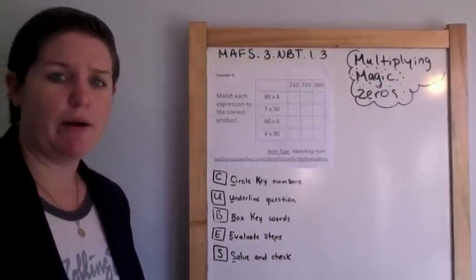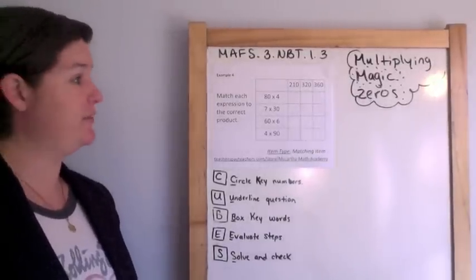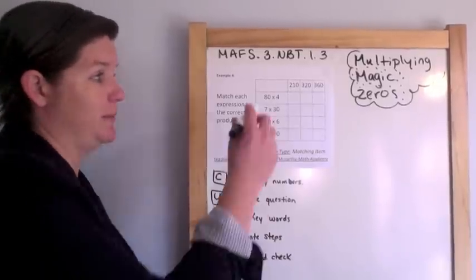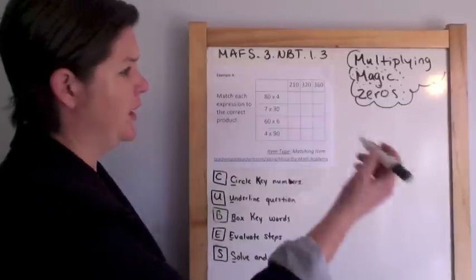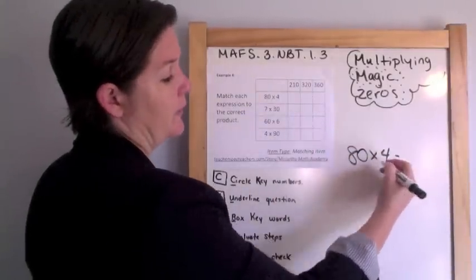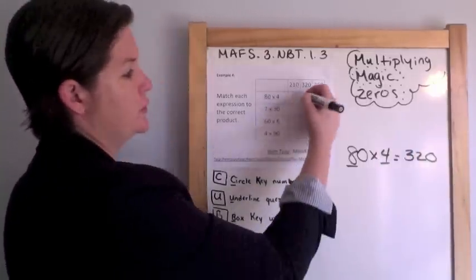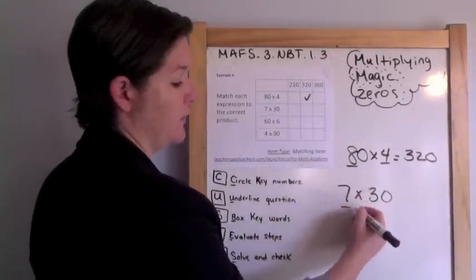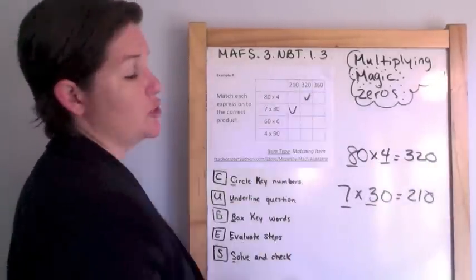Example number four. Match each expression — remember, an expression does not have an equal sign — to the correct product. I'm matching by putting a little check in the box. So we've got 80 times four: eight times four is 32, add zero — 320. Ba-boom! Seven times 30: seven times three is 21, add a zero — 210.